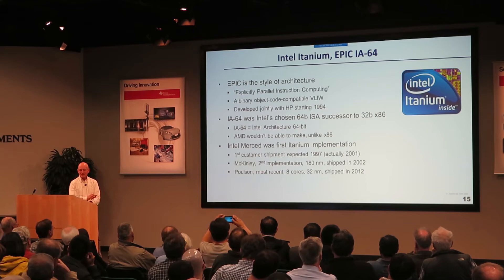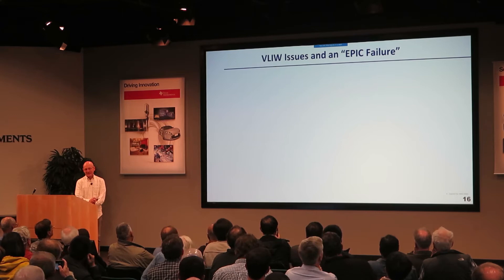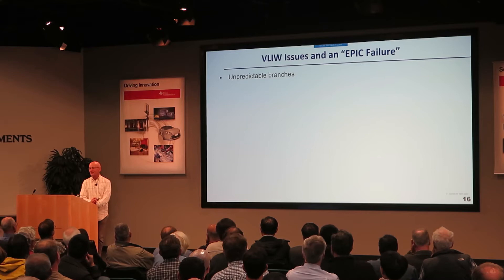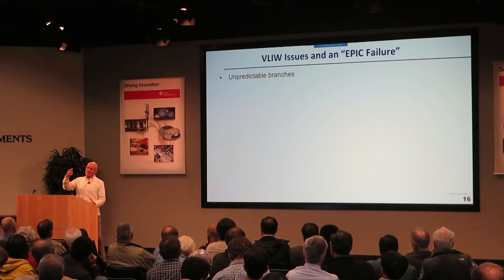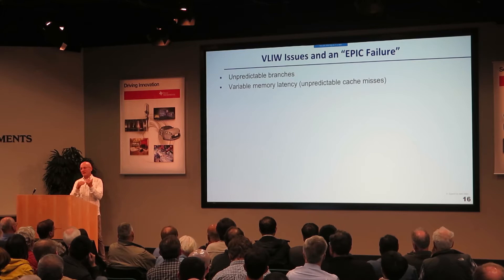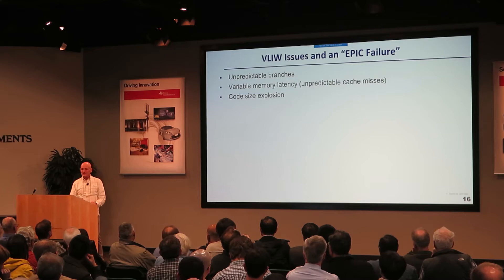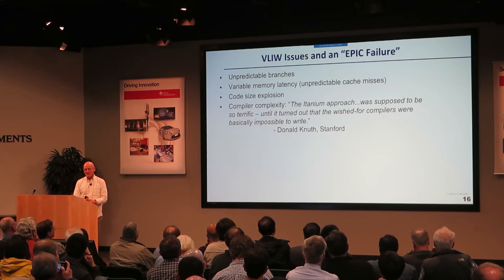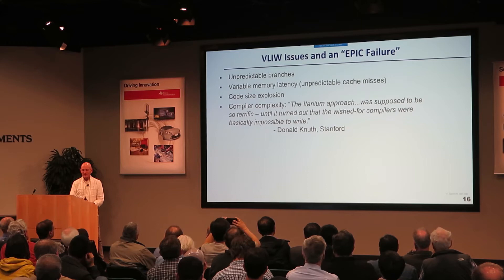There were three technical problems with VLIW. The first was unpredictable branches, which made it very hard to schedule. The second was variable memory latency — if you had a cache miss, it was very hard for software to schedule. The last one was just code size: it was called Very Long Instruction Words and the words were very long, so programs got big. Those three strikes got it. Donald Knuth, a Turing Award winner, said the Itanium approach was supposed to be terrific, but it turned out that the wish for compilers was basically impossible to fulfill.